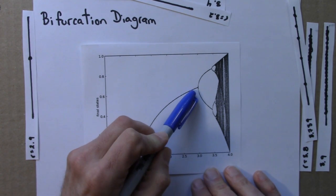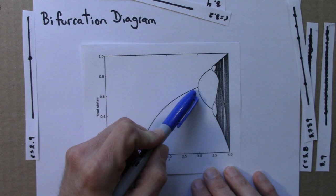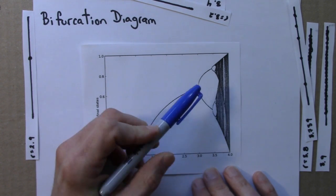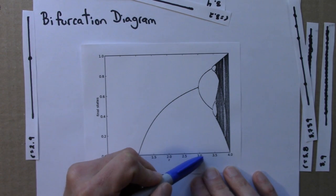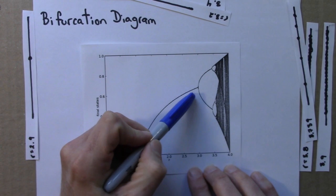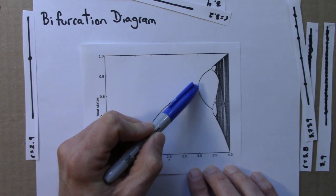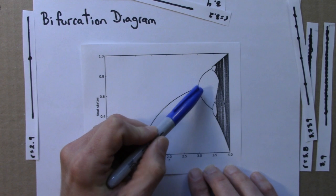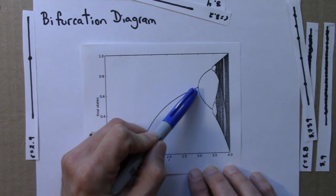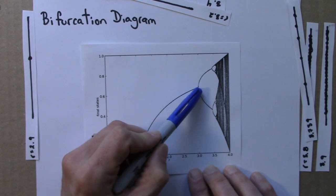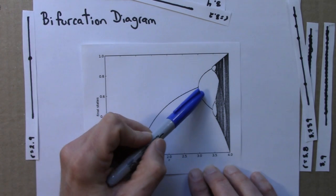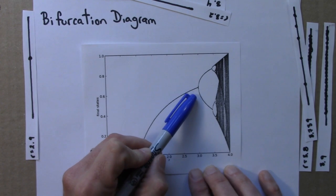I would say the system undergoes a bifurcation here at R equals 3. Remember, a bifurcation is a sudden qualitative change in the behavior of a dynamical system, as a parameter is varied continuously. So the qualitative change here is that the fixed point here splits into two. So we go from an attractor of period 1 to an attractor of period 2. So that's a bifurcation. And it's called a period doubling bifurcation because the period doubles.